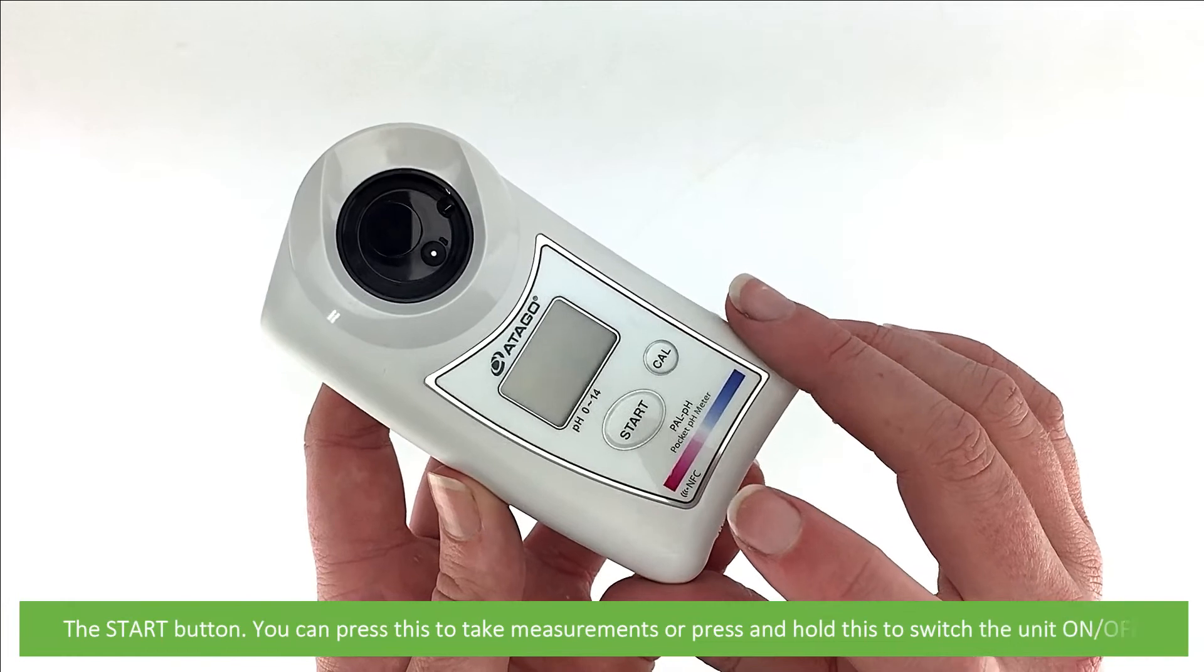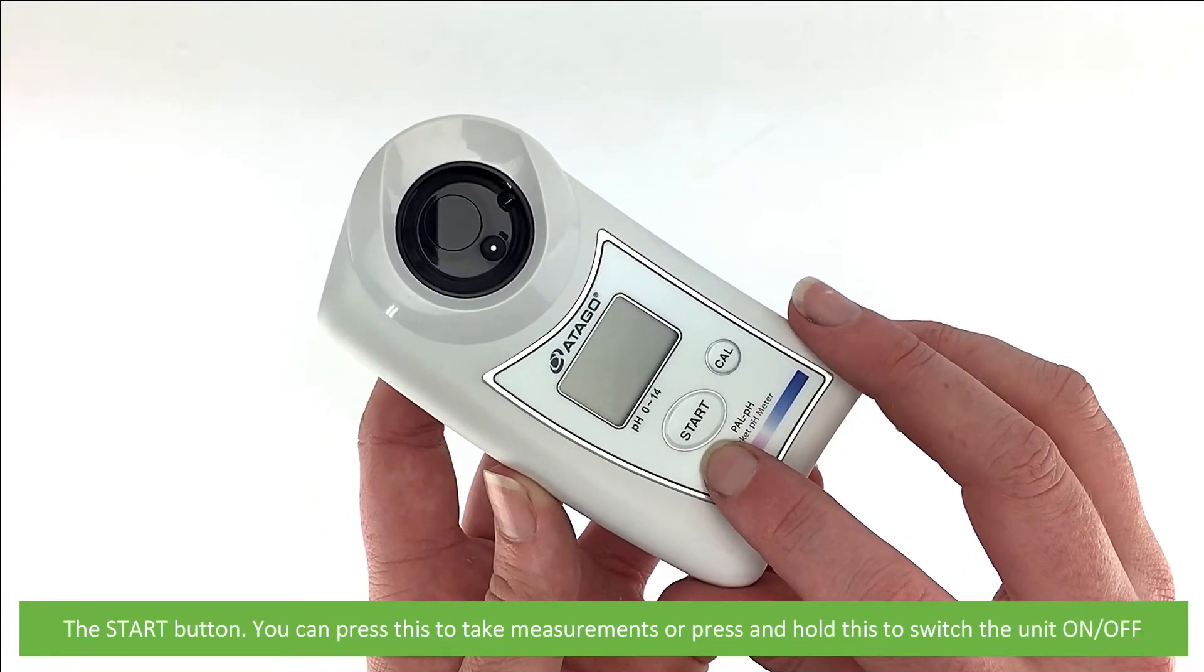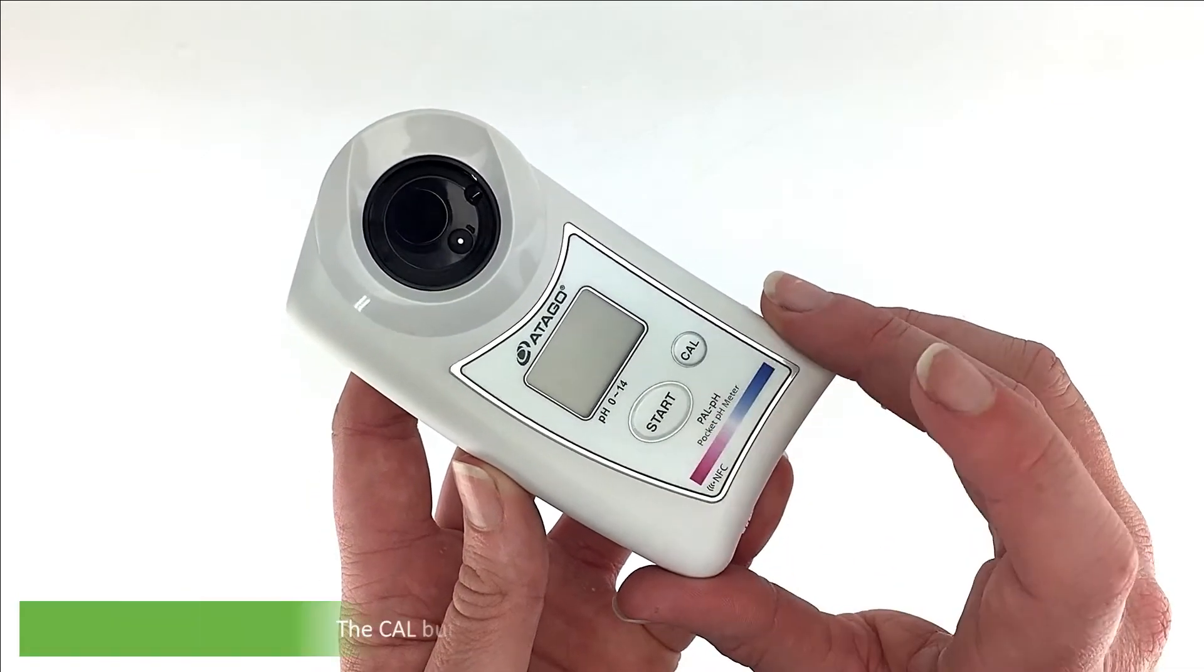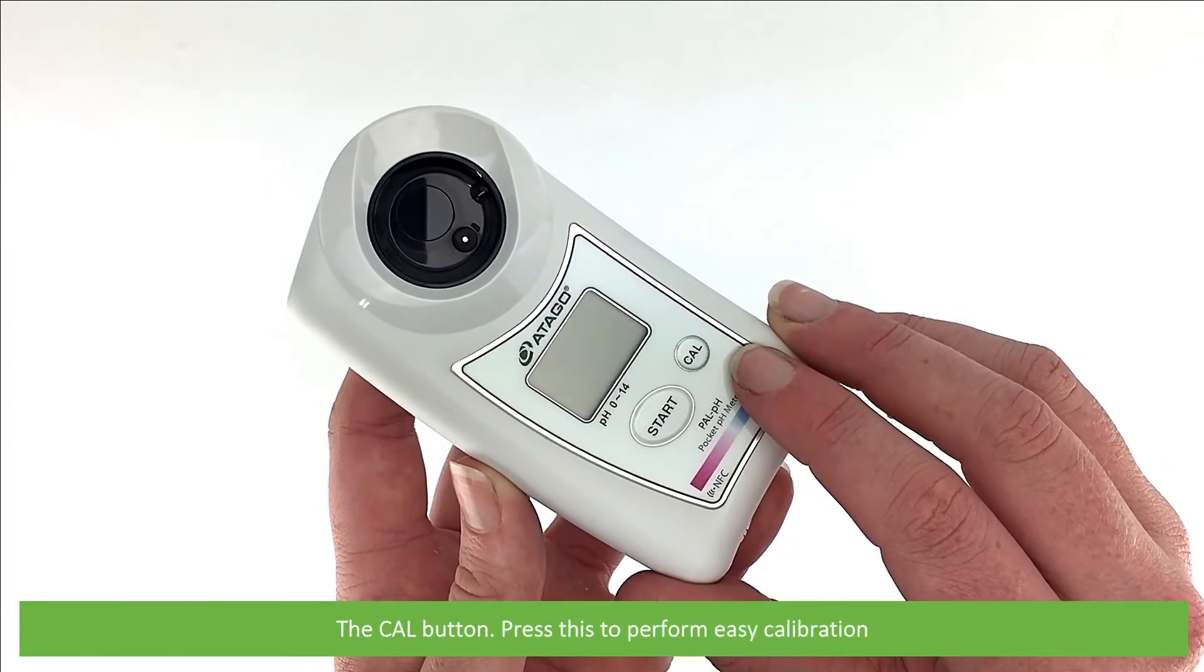The start button: you can press this to take measurements or press and hold this to switch the unit on or off. The cal button: press this to perform easy calibration.